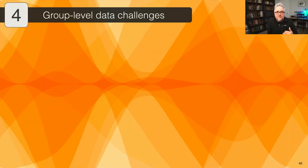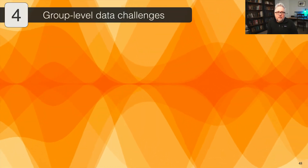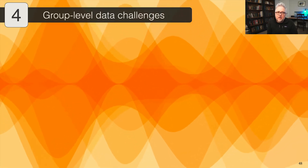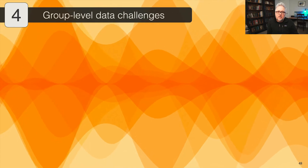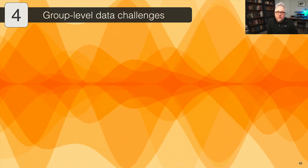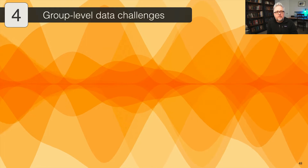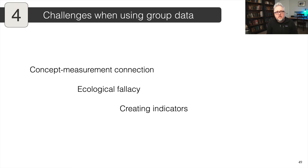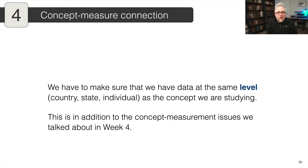To be sophisticated consumers of modern political science analysis, as well as producers of said analysis, I wanted to highlight several challenges to analyzing group-level data. I want to focus on three specifically: how connected our concepts and measures are, something that connects to our discussion in week four, the ecological fallacy, and the difficulty and unstated assumptions in creating indicators of measures that we care about.